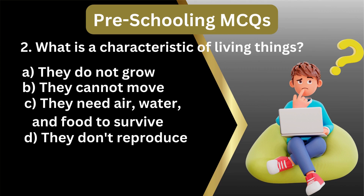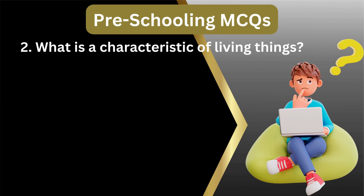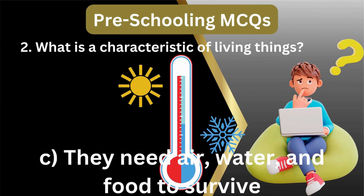2. What is a characteristic of living things? A. They do not grow, they cannot move, they need air, water, and food to survive, they don't reproduce. Answer: C. They need air, water, and food to survive.